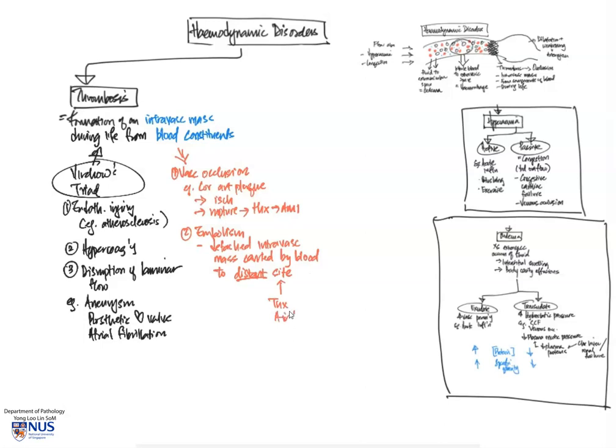There are several types of embolism, and they include thrombus from blood, platelets, fibrin, also air embolism or gaseous embolism as can be seen in divers, and fat or marrow embolism.